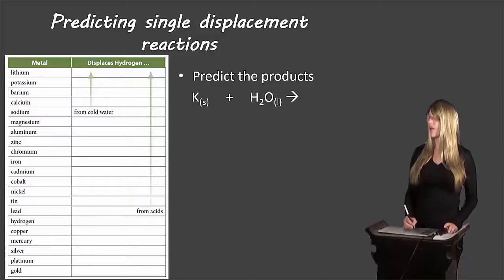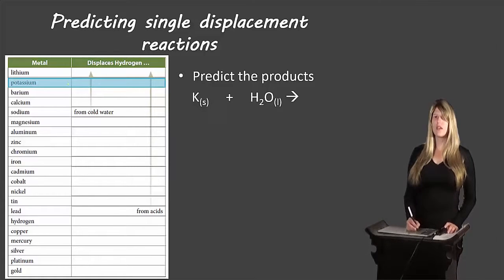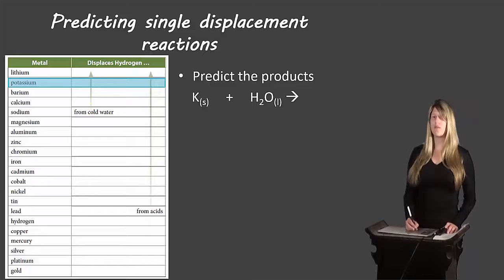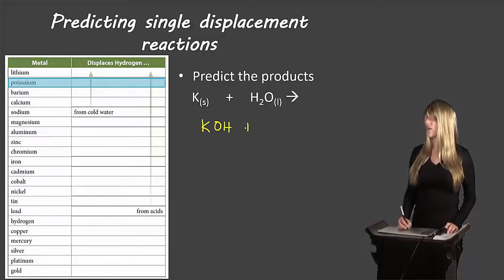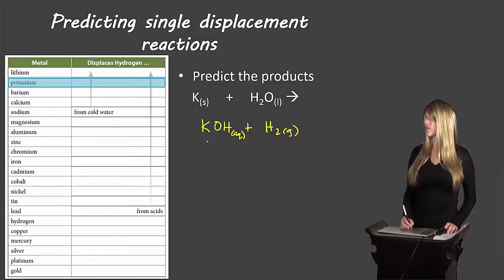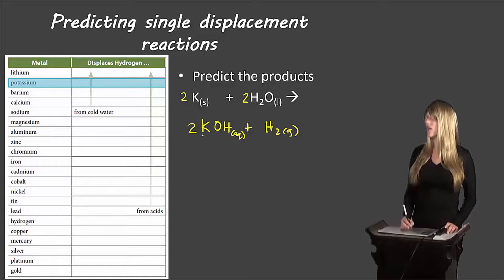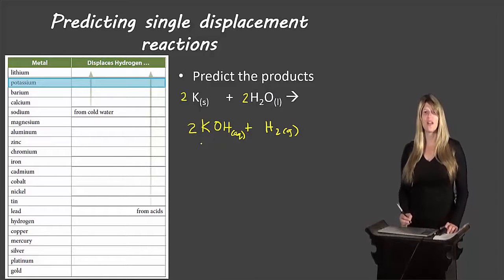Another example: potassium displacing hydrogen from water. Potassium is near the top — one of the most reactive metals — and it can displace hydrogen from water because it crosses the 'from cold water' arrow. We end up with potassium hydroxide as an aqueous compound and hydrogen gas. Balancing the equation: we place a 2 in front of potassium and potassium hydroxide, giving us two potassium, four hydrogen (two plus two), and two oxygen on each side. The equation is now balanced.